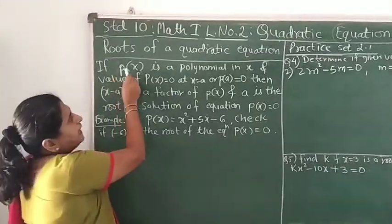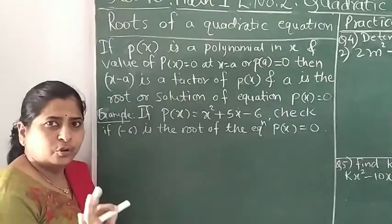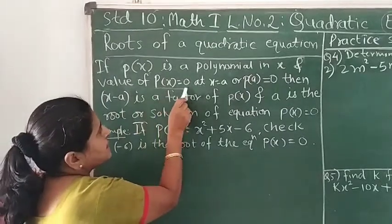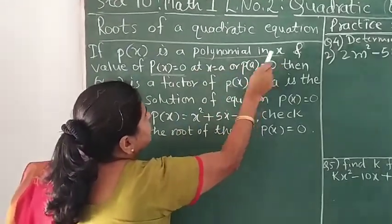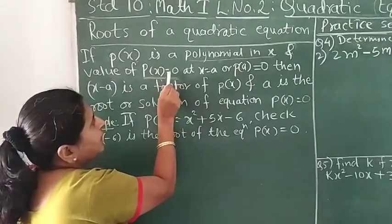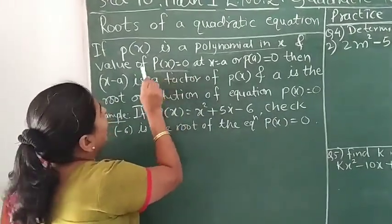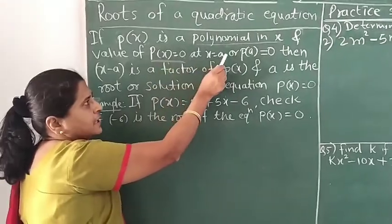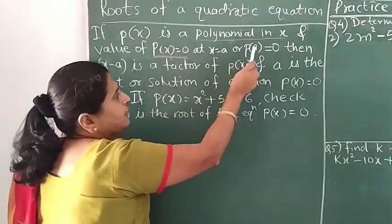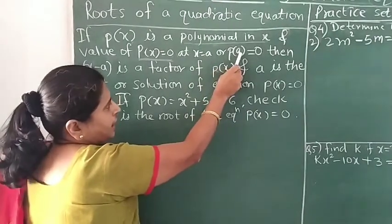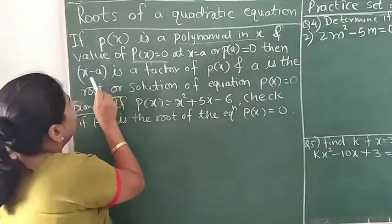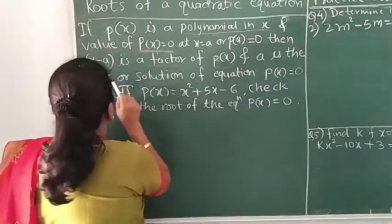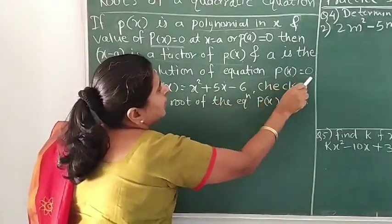If P(x) is a polynomial in x, we have learned in previous classes that if the value of P(x) is equal to 0, and value of this polynomial is 0 at x equal to a — meaning if we substitute x as a and it gives 0 — then x minus a is a factor of P(x), and a is the root or solution of the equation P(x) = 0.